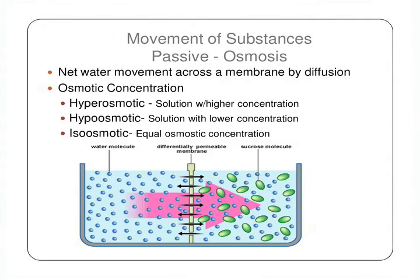The next type of passive movement is osmosis, which is very similar to diffusion. However, instead of molecules or ions moving, it is the water that moves across the membrane. There are three types of osmotic concentration: hyperosmotic, when a solution has a higher concentration; hypoosmotic, when the solution has a lower concentration; and isoosmotic, when there is an equal concentration.